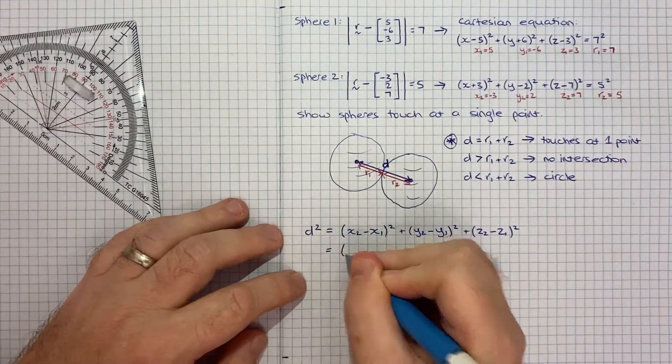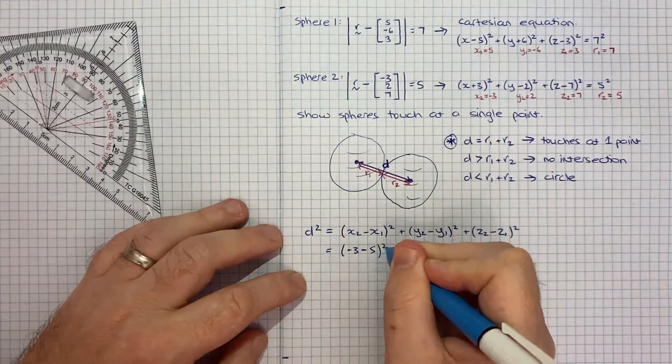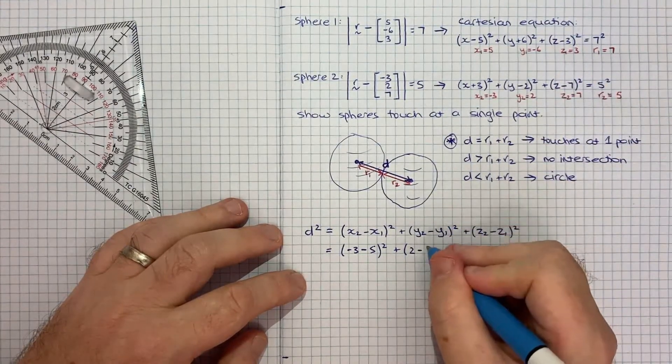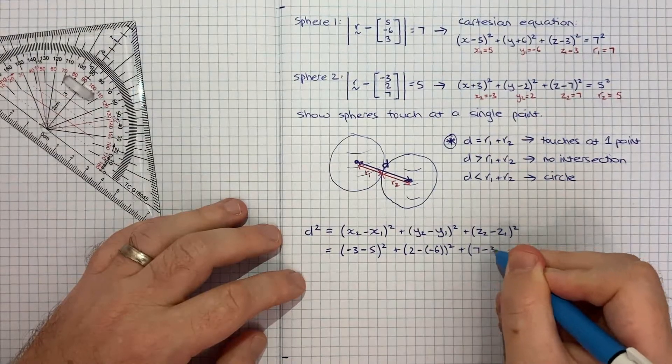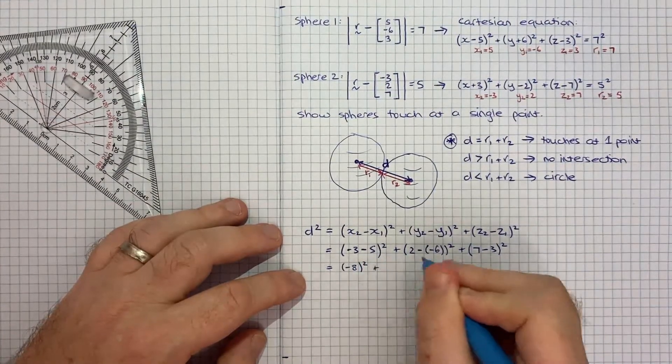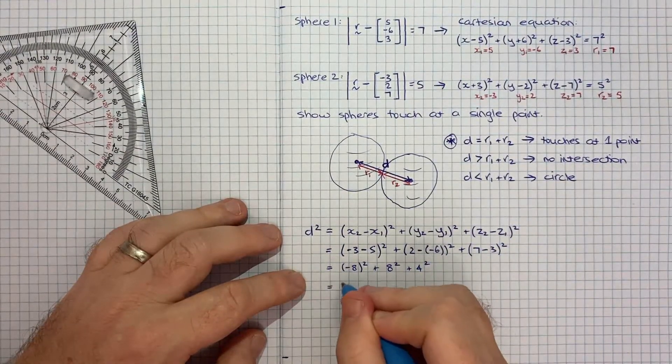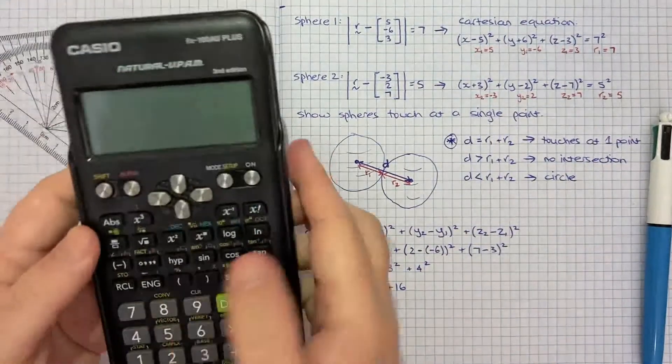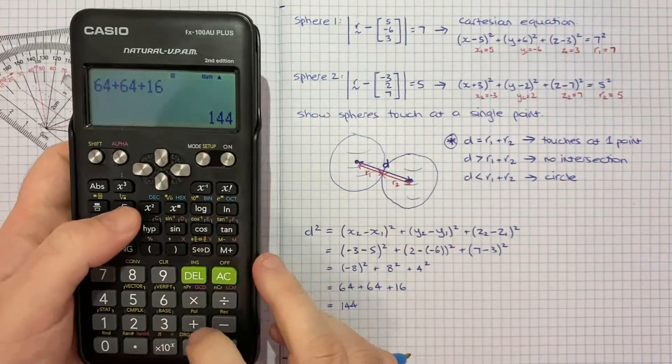Now we plug in these numbers. d² equals (-3 - 5)² + (2 - (-6))² + (7 - 3)². That's (-8)² + (8)² + (4)², which equals 64 + 64 + 16. My mental arithmetic is not good enough, so 64 + 64 + 16 equals 144. The square root of that should be 12.